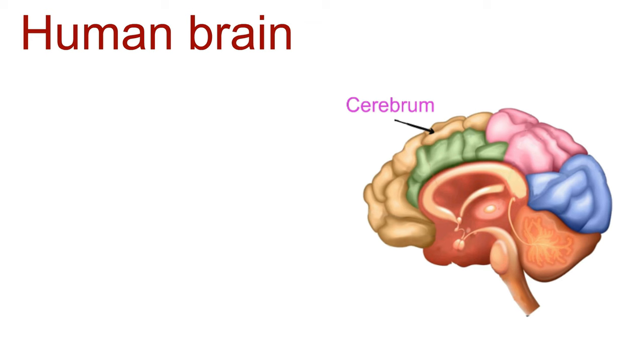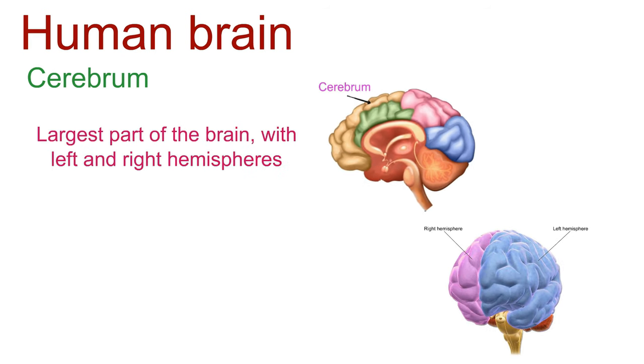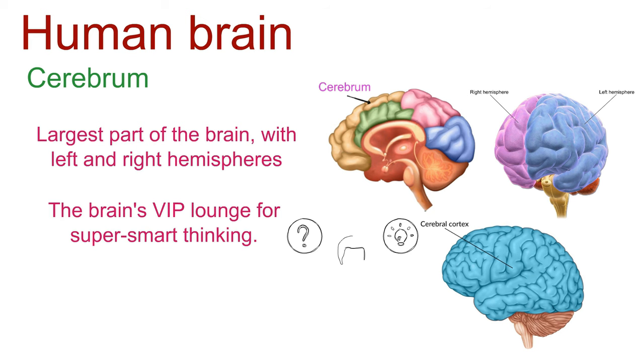First up, we've got the rock star of the forebrain, the cerebrum. Picture this: it's the largest part of the brain, with left and right hemispheres. Meet the cerebral cortex, the brain's VIP lounge for super smart thinking.